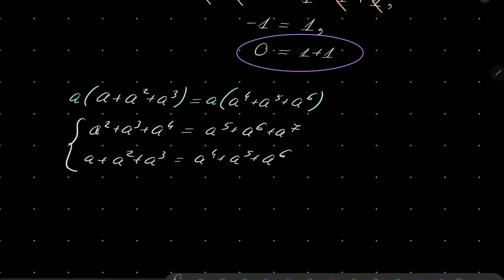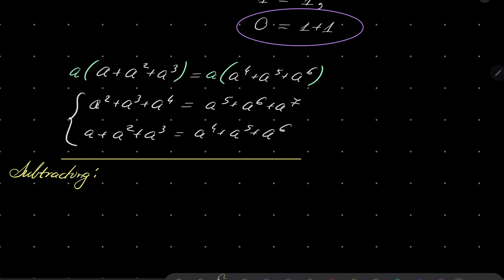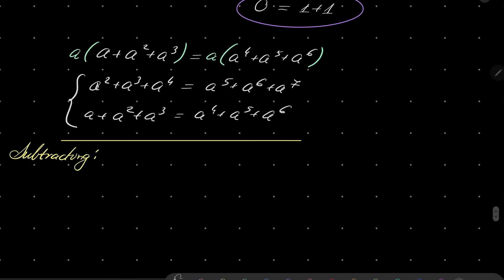What I will do is subtract these two equations from one another. Subtracting, we will have A to the fourth power minus A equals A to the seventh power minus A to the fourth power. Notice that I can rearrange: A to the fourth plus A to the fourth, minus A minus A, equals A to the seventh power minus A.